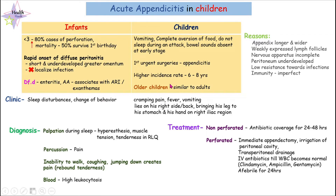The incidence rate in children is high between the ages of six to eight years old. These children usually present with vomiting, complete aversion of food, and they do not sleep during an attack. At an early stage of the disease, bowel sounds are absent. Appendicitis surgery is the most common urgent surgery that children undergo.